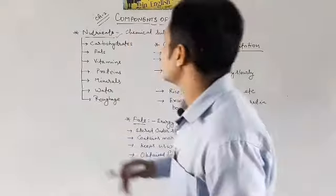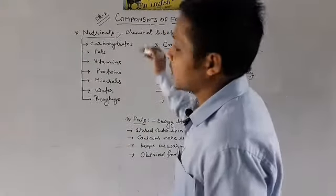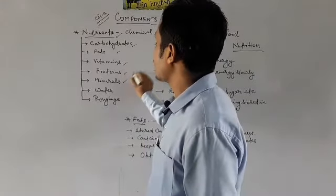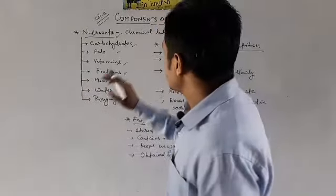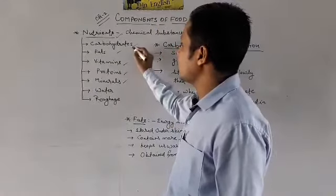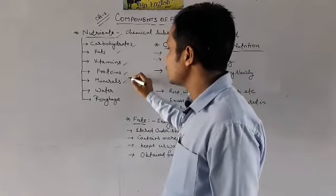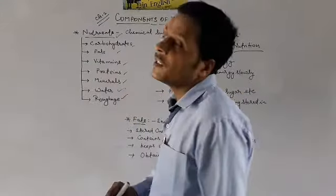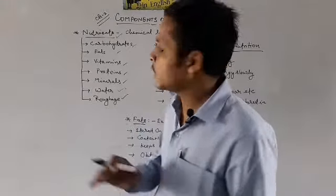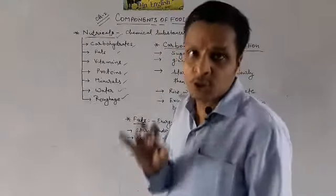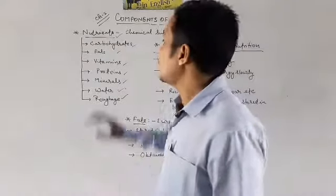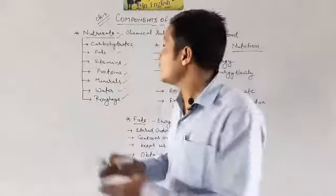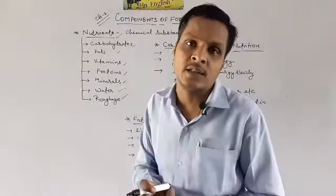Nutrients को हम लोग classify करते हैं various parts में. Mainly 5 parts: carbohydrates, fats, vitamins, proteins, and minerals. And हमारी body के लिए water और roughage भी जरूरी होता है — इन्हें भी हम a type of nutrients मानते हैं. And these all are required for our body — हमारी body के growth और development के लिए यह सभी proper ratio में required हैं.